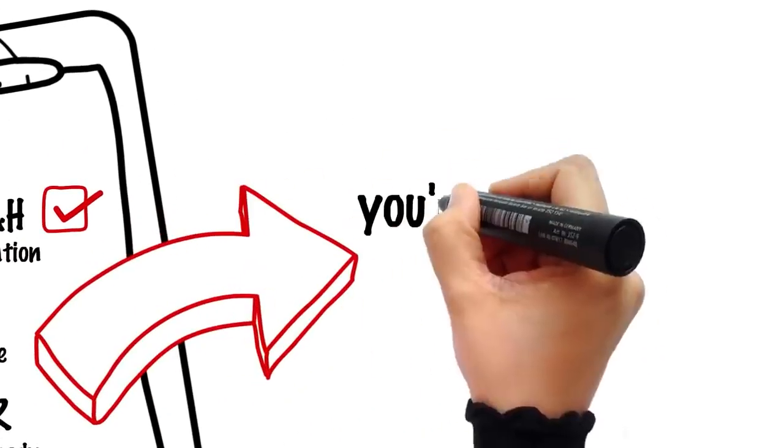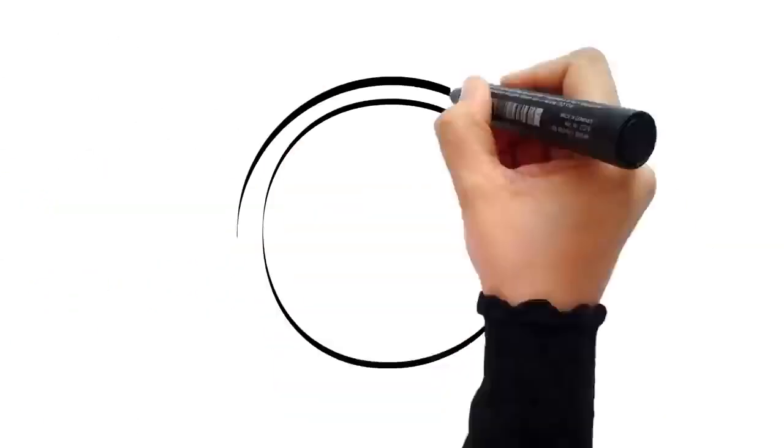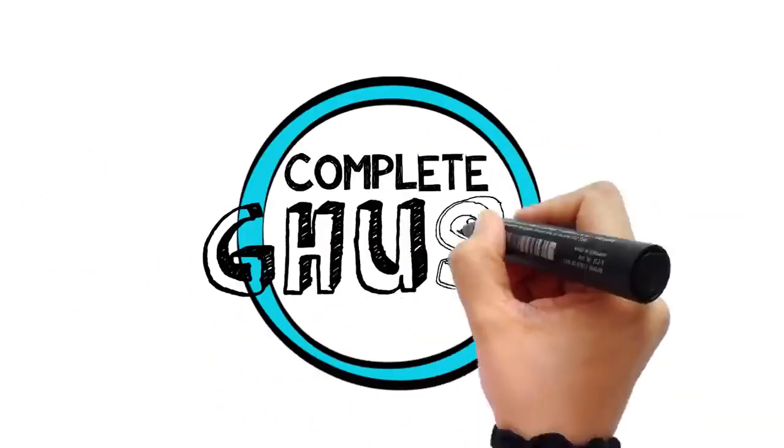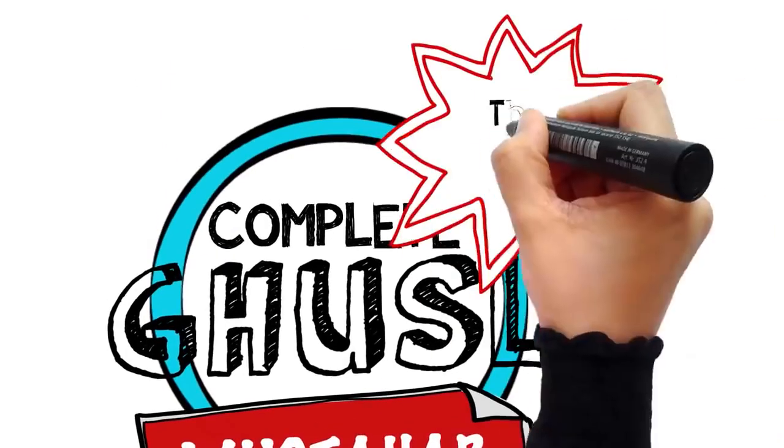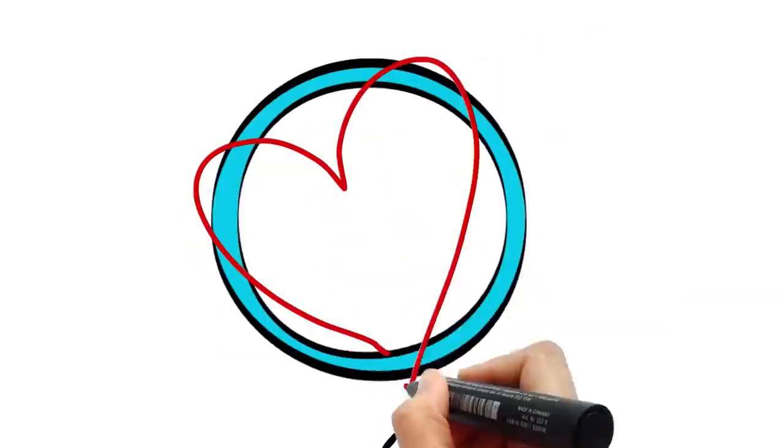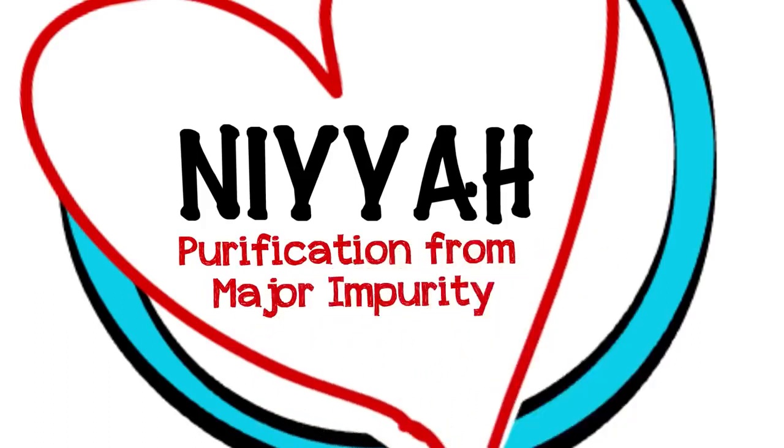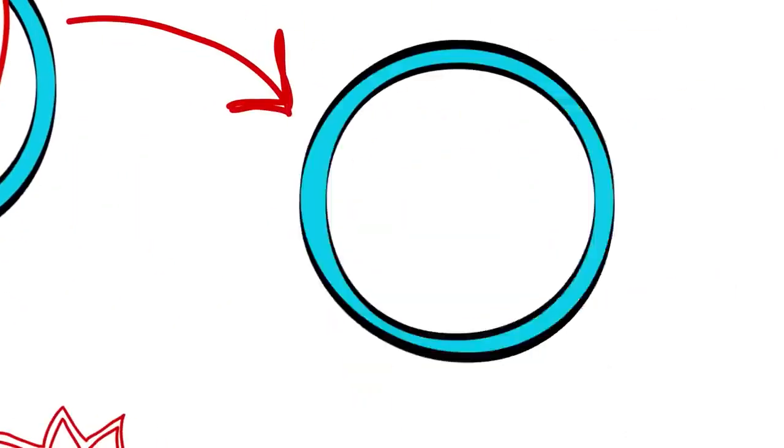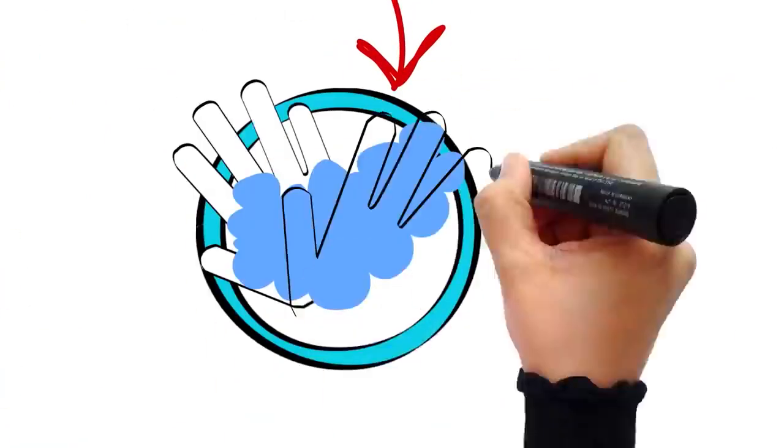If you manage to do this much, then you have purified yourself from the major ritual impurity. As for the complete ghusl, this is the mustahhab one, and it is how the Prophet sallallahu alaihi wasallam took a bath. And this is how you do it: begin with an intention to purify yourself from the major impurity, then say bismillah, wash your hands three times.